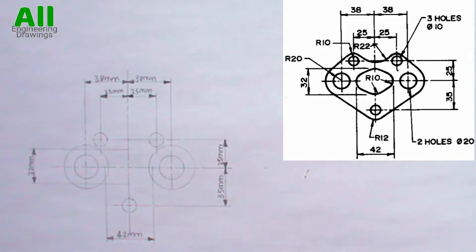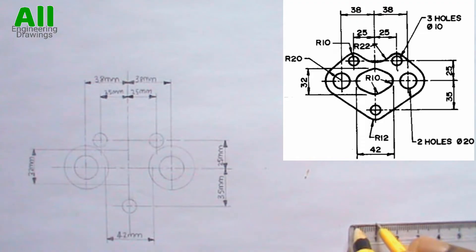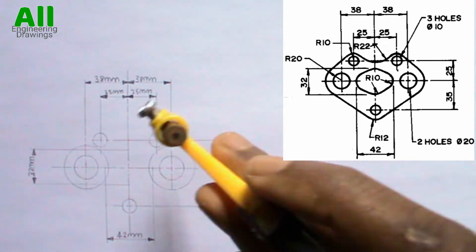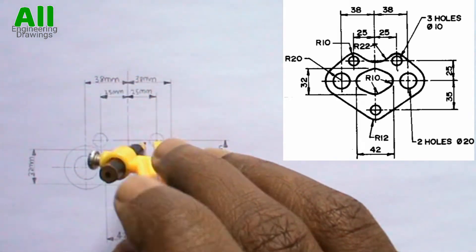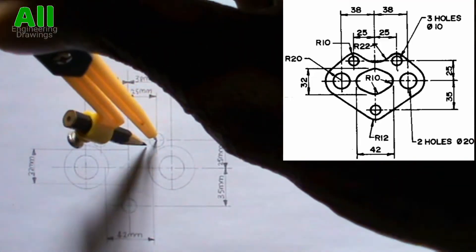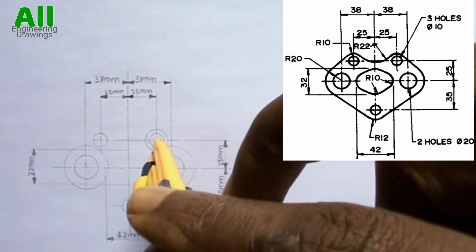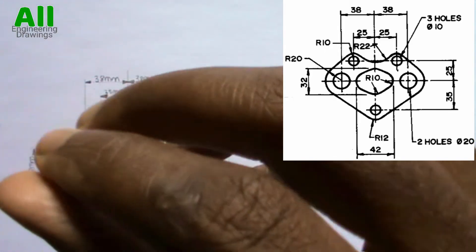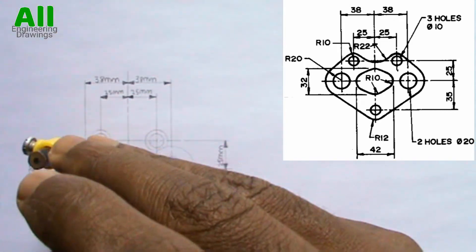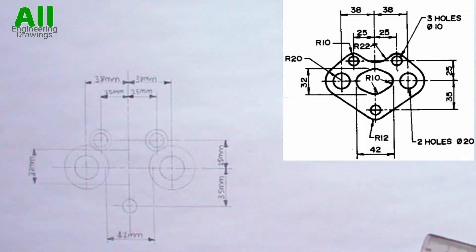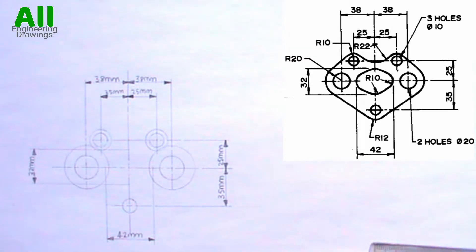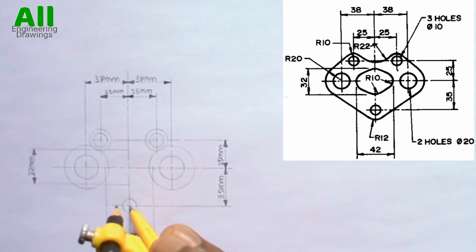Next, adjust your compass to a radius of 10mm, then draw circles on these points. After that, adjust your compass to a radius of 12mm, then place your compass on this point and draw a circle.